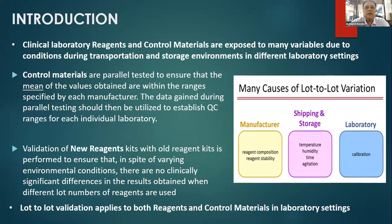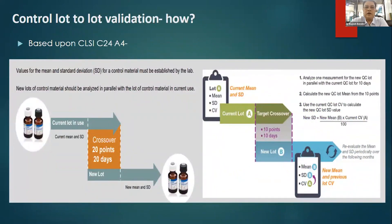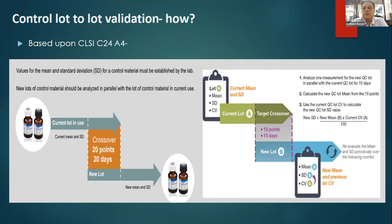Hence it is required that every lab, before a new lot of control or reagent is put in use, we need to do some kind of validation and confirm to ourselves and to our patients that there is no variation which is going to cause any harm in terms of variability of results. So let's jump straight to how we do a lot-to-lot validation for controls. We would preferably try and use third-party controls for whatever section of the lab we are talking about, whether it is hematology or biochemistry.